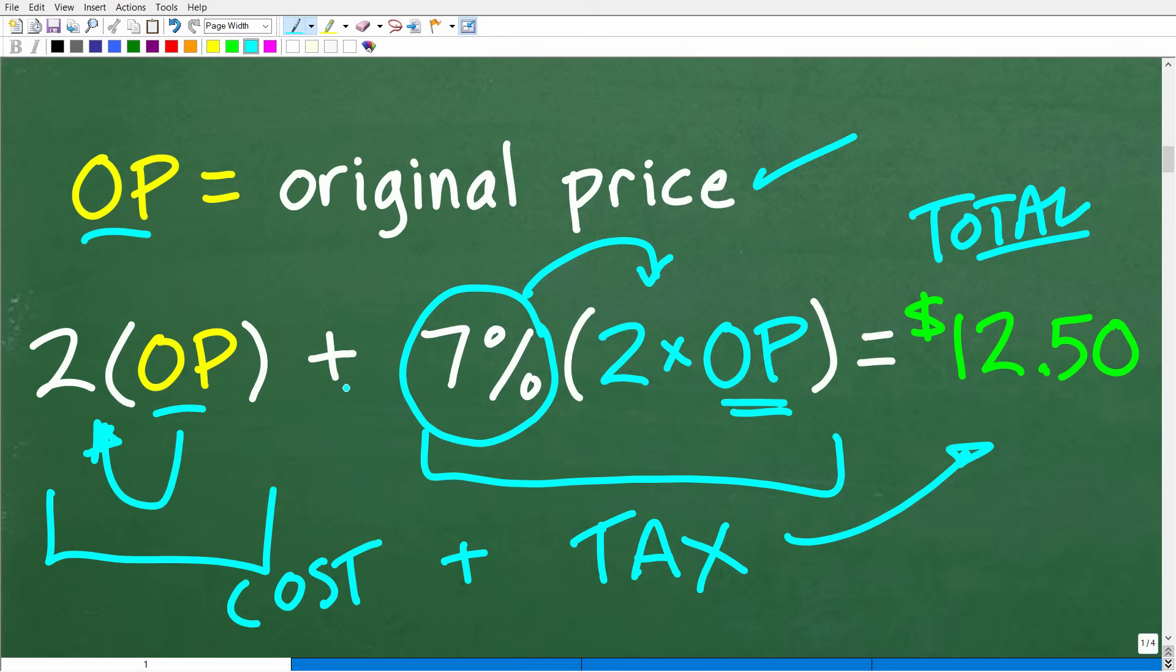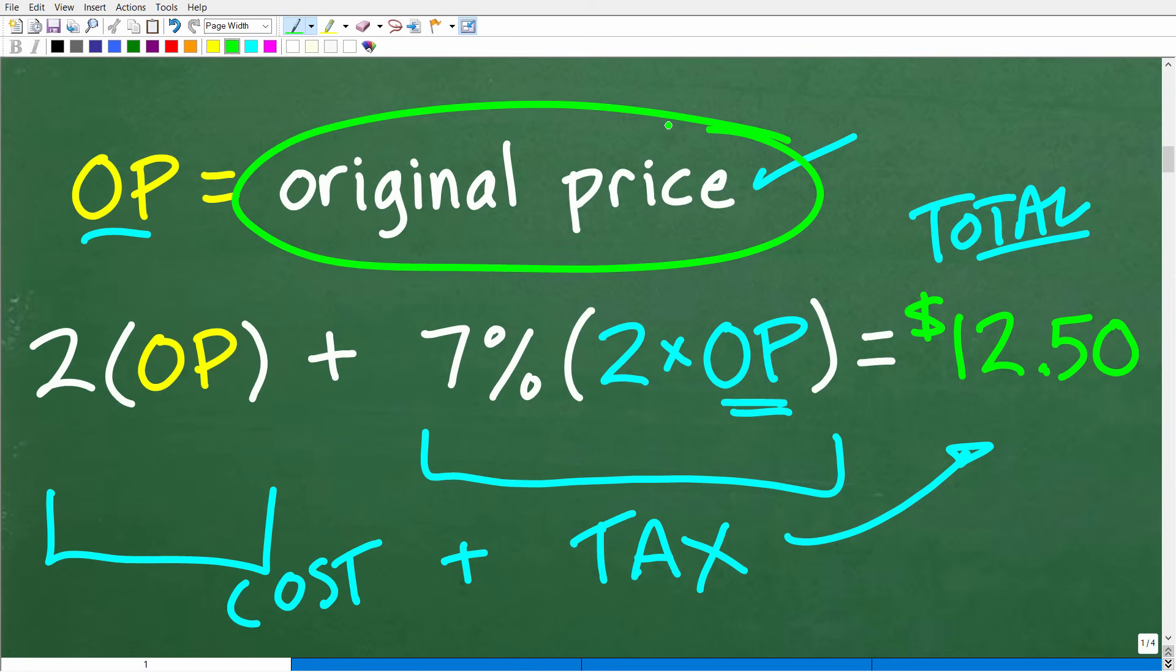So two times the original price plus 7% times two times original price, all this right here is basically a visual model and an easier to understand model of the transaction that's going on that represents this problem. So with this, we need a variable to represent the unknown, and what is the unknown value here? The unknown value is the original price. So because you're looking for an unknown value, algebra should come to mind because we can let a variable, something like X, represent the unknown value. And then what we want to do is set up an equation, but you can see here this is pretty much already set up for us in terms of an equation. We have an equal sign here, but instead of using this OP original price notation, let's go ahead and formalize this with an actual variable like X.